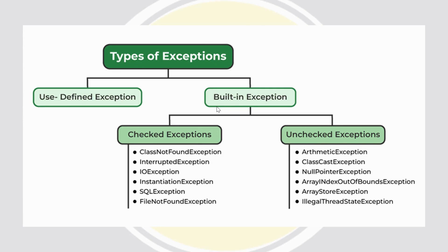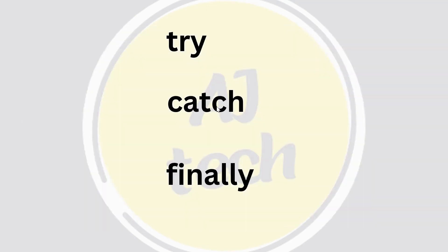If you need a separate video on the exceptions concept, just comment in the comment box. In Java, to handle exceptions we use try, catch, and finally blocks. The finally block executes whether or not an exception occurs. If you want to throw exceptions, we can use the throw and throws keywords to create a custom exception. This is one way to handle exceptions, but in this video we'll go with the Spring Boot exception handling approach.